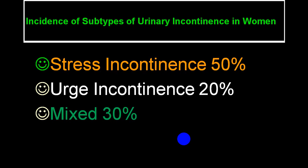There are three common varieties of incontinence: stress incontinence accounts for nearly 50 percent of cases, urge incontinence accounts for 20 percent, and mixed variety accounts for 30 percent. So stress incontinence accounts for the major group and we will be discussing more on stress incontinence.